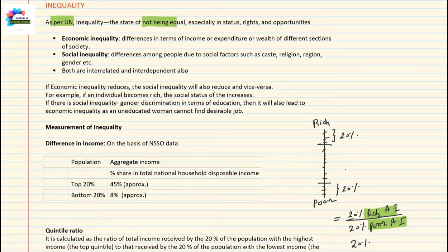The state of not being equal in status, rights and opportunities. When there is no equality in status, for example, one person's economic status is less than another's — one person is rich, another person is poor.